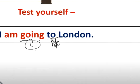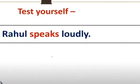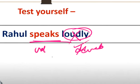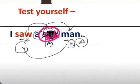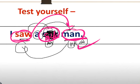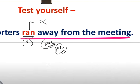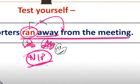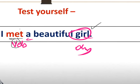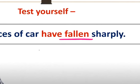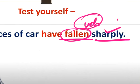So let's recap: noun and pronoun after a preposition form the object of the preposition. 'Rahul speaks loudly' - 'loudly' has no noun or pronoun, so it is not an object, it is an adverb. 'I saw a sick man' - after the verb it is a direct noun, so 'man' is the object. 'The supporters ran from the meeting' - after the verb it is not a noun or pronoun, so it is not the object of the verb. 'I met a beautiful girl' - after the verb it is 'a girl', so that is the object. 'Prices of car have fallen sharply' - 'sharply' is not a noun or pronoun, so it is not the object.